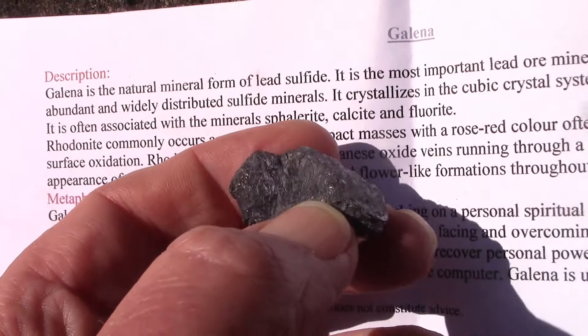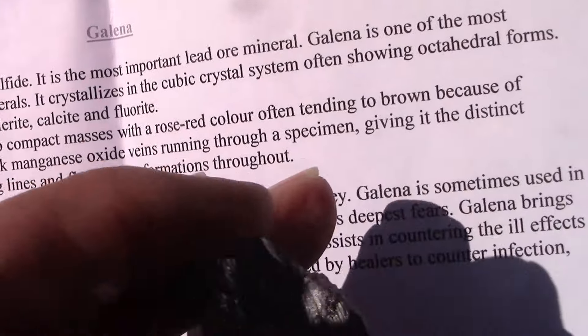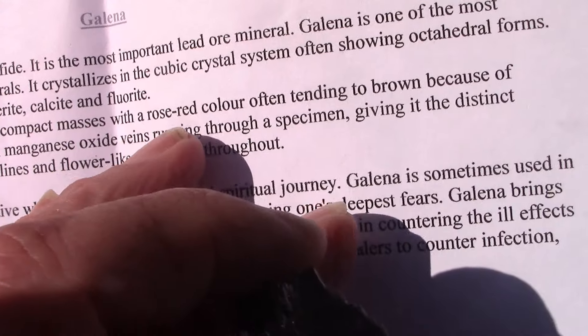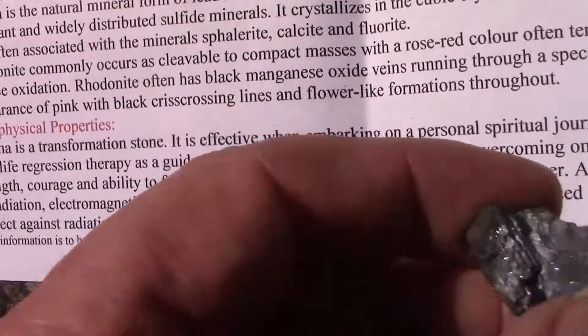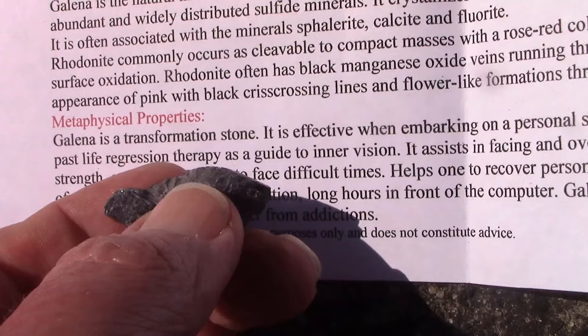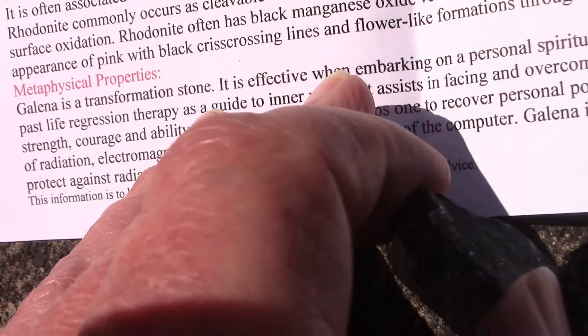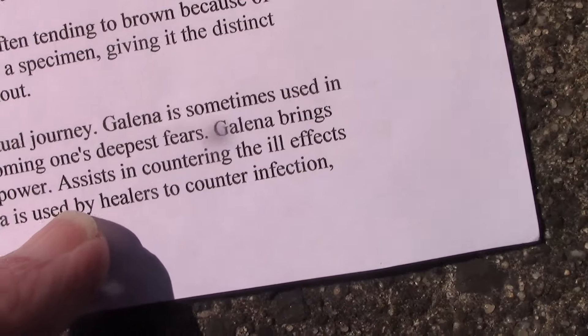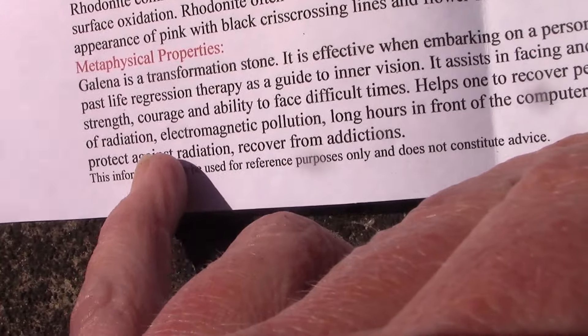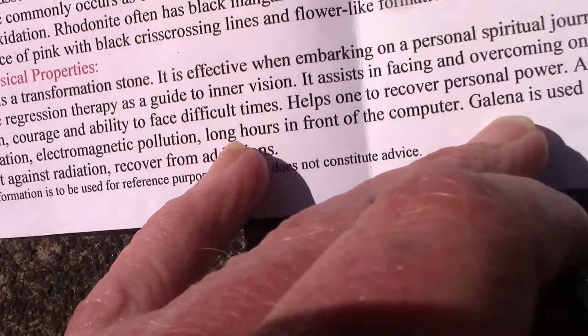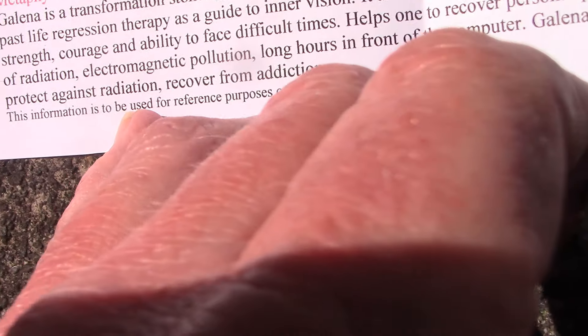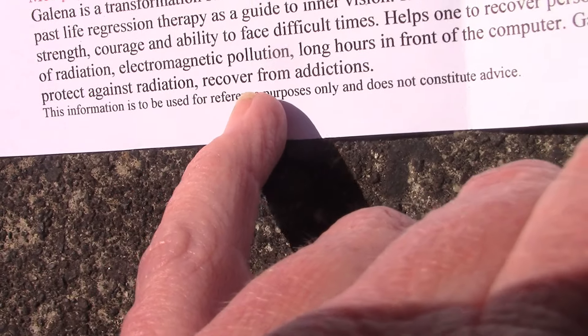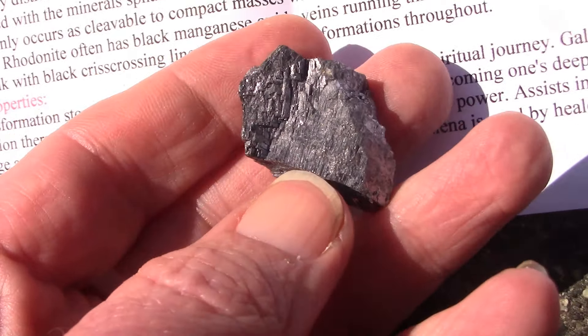What it is, it's a natural mineral form of lead sulphide. And it talks a bit about its properties and colors. And apparently it's got all these metaphysical properties. And it's described as a transformation stone. And it says it assists in countering the ill effects of radiation, electromagnetic pollution, long hours in front of the computer. And it's used by healers. And anyway, of course, in the fine print it says this information is to be used for reference purposes only and does not constitute advice. So enough of the Galena.